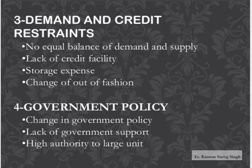Third external cause is demand and credit restraints, which includes no equal balance of demand and supply, lack of credit facility, storage expense, and change in fashion. Fourth is government policy — a very important point. Change in government policy can be a cause of industrial sickness, as can lack of government support and high authority given to large units.